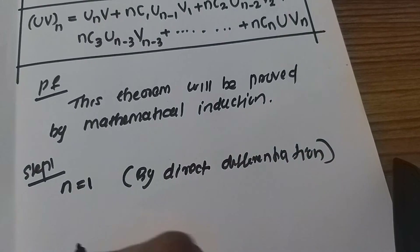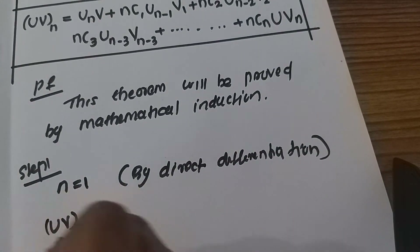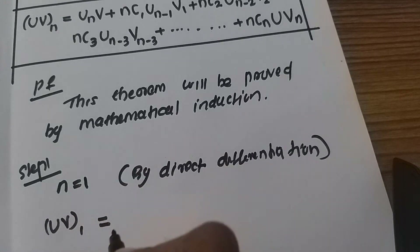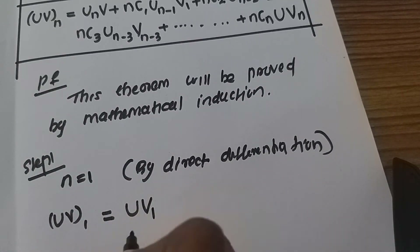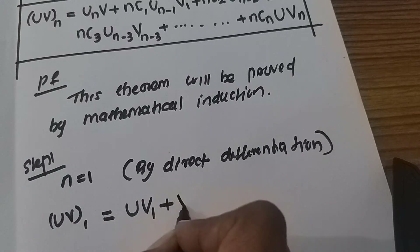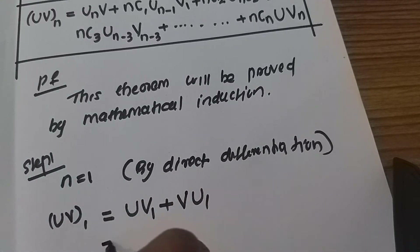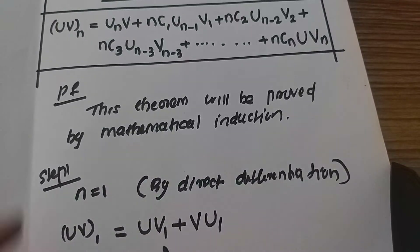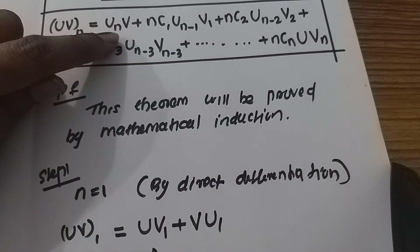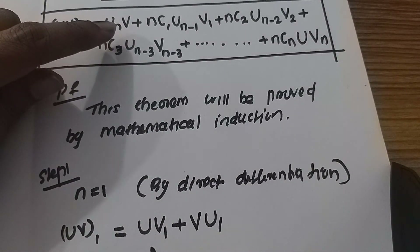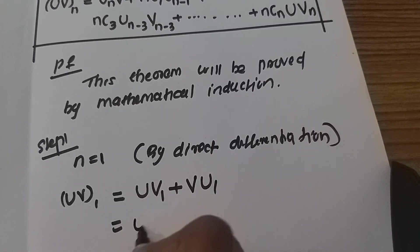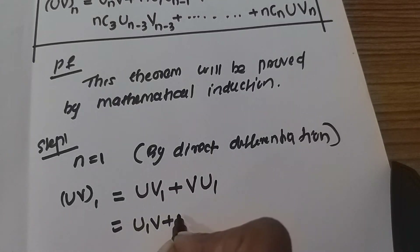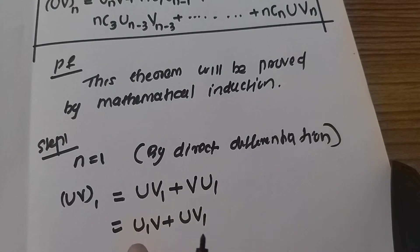The first derivative of uv is: u times the derivative of the second function, plus v times the derivative of the first function. For n equal to 2, we have to prove it.